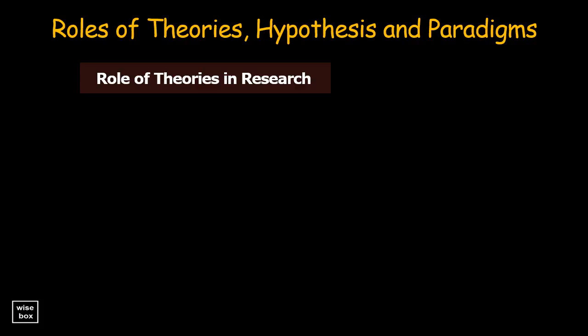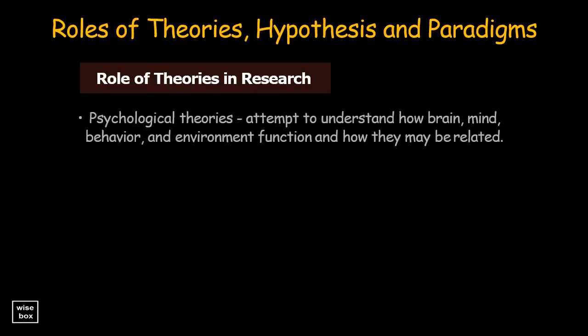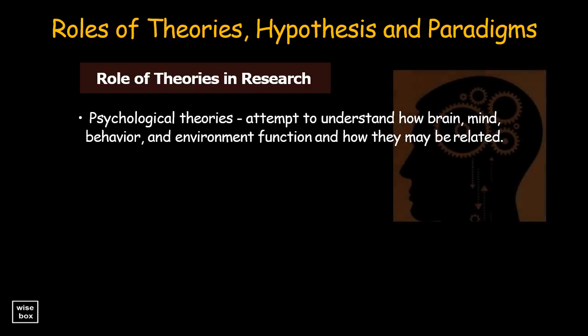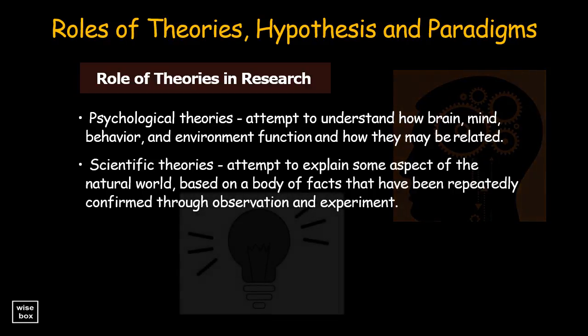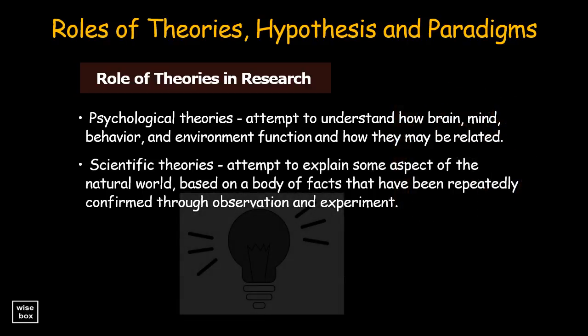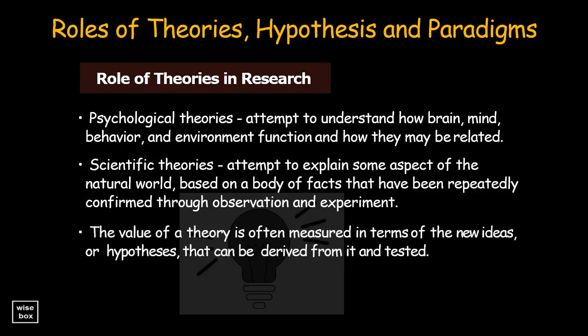What is the role of theories in research? Psychological theories in general attempt to understand how brain, mind, behavior, and environment function, and how they may be related. Scientific theories attempt to explain some aspect of the natural world based on a body of facts that have been repeatedly confirmed through observation and experiment. The value of a theory is often measured in terms of the new ideas or hypotheses that can be derived from it and tested.